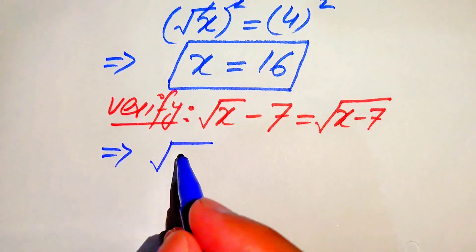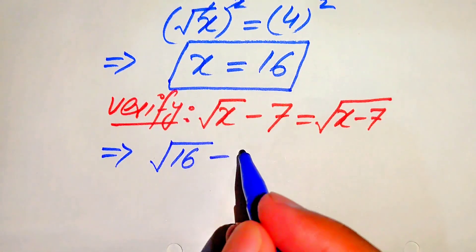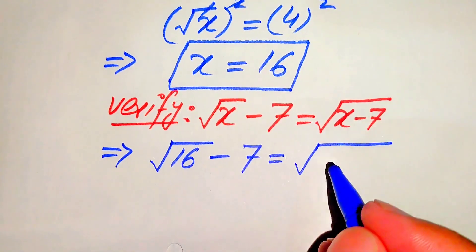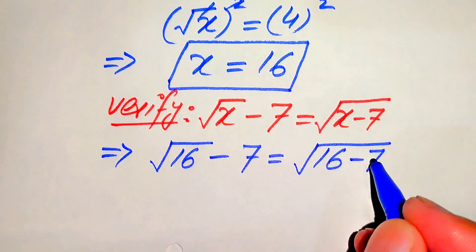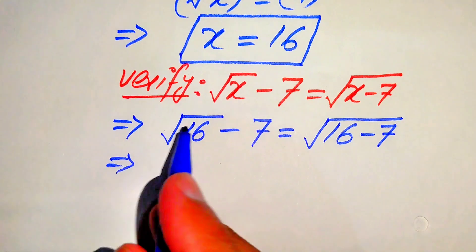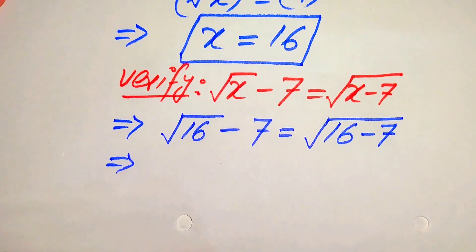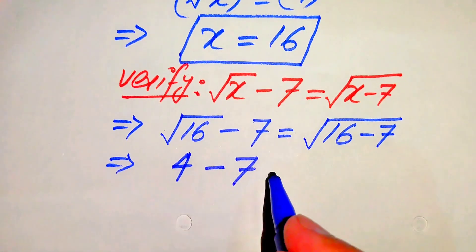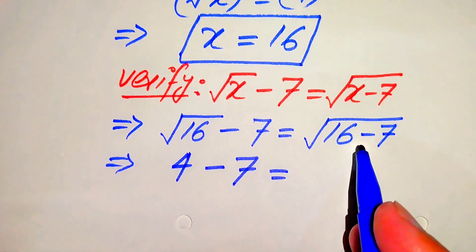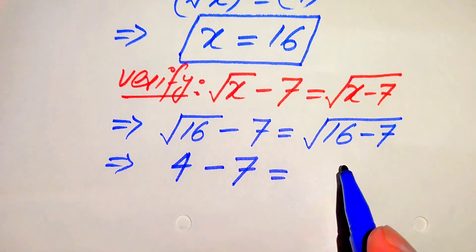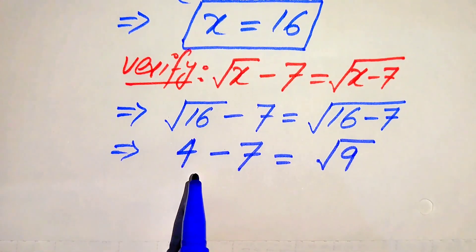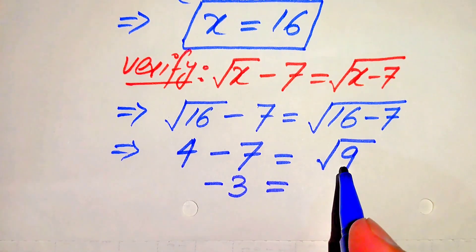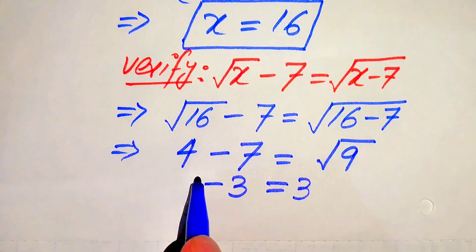When we put this value in, it becomes: square root of 16 minus 7 equals square root of x minus 7, which becomes 16 minus 7. We easily find the square root of 16. Square root of 16 equals 4, so we get 4 minus 7 on the left side, and 16 minus 7 equals 9 so we get square root of 9 on the right side. So 4 minus 7 equals minus 3, and square root of 9 equals plus 3.